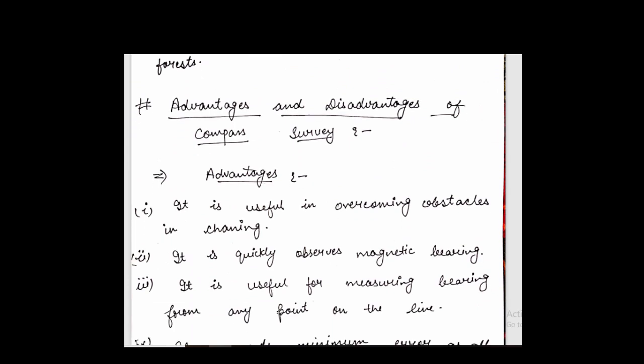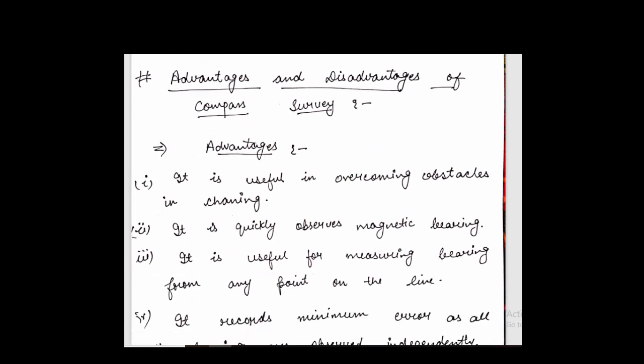Next are the advantages and disadvantages of compass survey. The advantages are that we measure bearing directly. The accuracy of the compass survey is affected by magnetic attraction and the reading of the needle, because the needle has magnetic attraction.